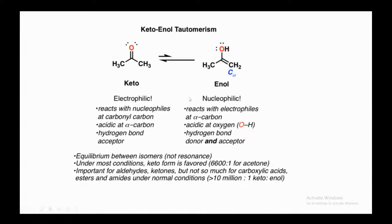Keto-enol tautomerism: 'keto' means ketone, and 'enol' means a functional group containing 'en' (alkene, double bond) and 'ol' (alcohol). The enol form contains a double bond and an OH group, while the keto form contains the ketone functional group. Tautomerism is the shifting or transfer of protons internally within the same molecule — a proton moves from the CH3 group toward the oxygen.